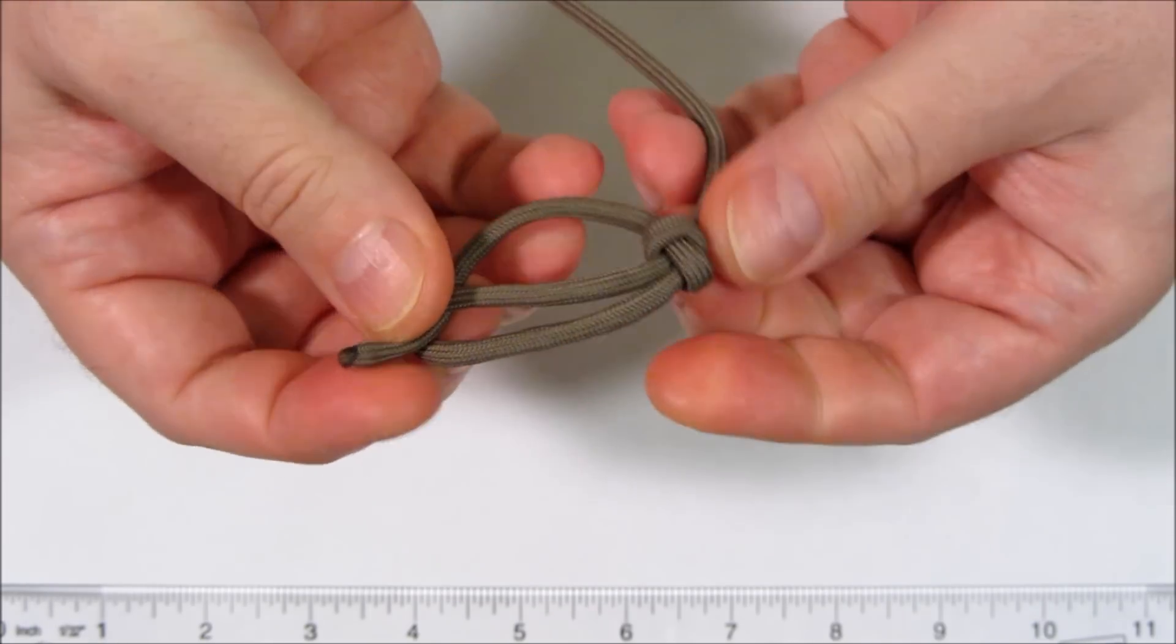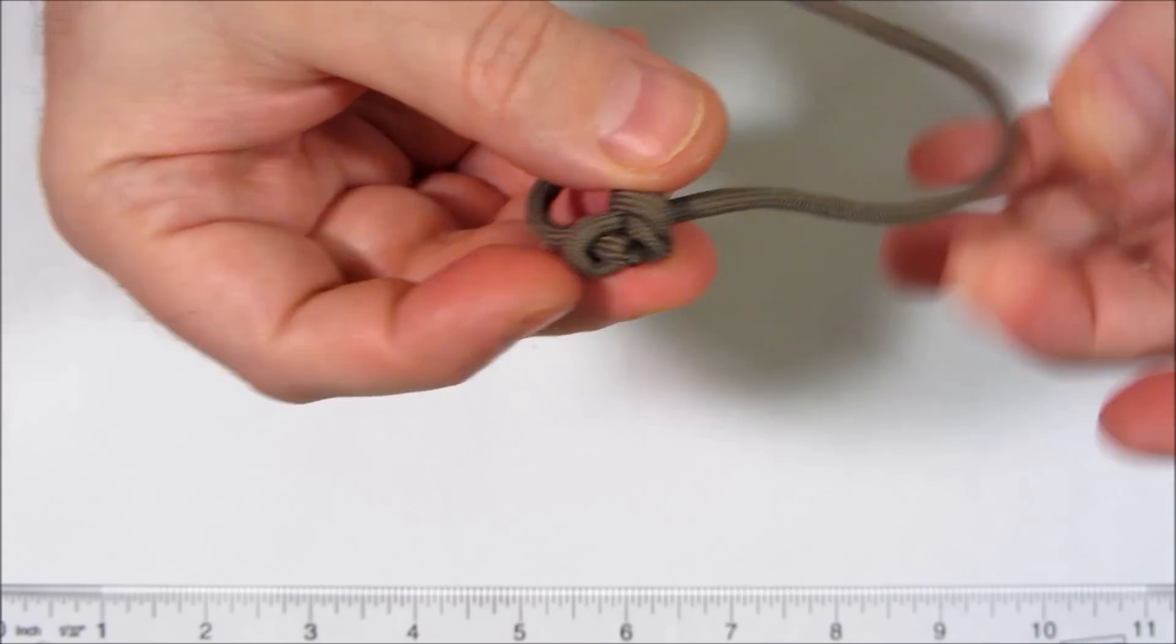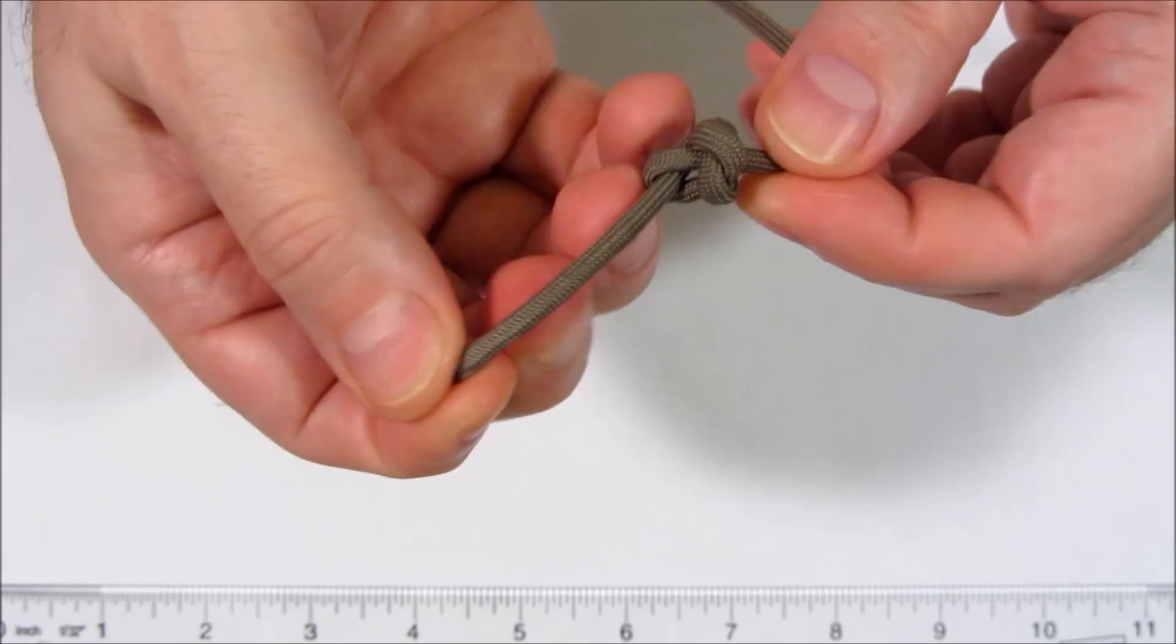Now tighten this side first, then this, and then finally the tail at the top.